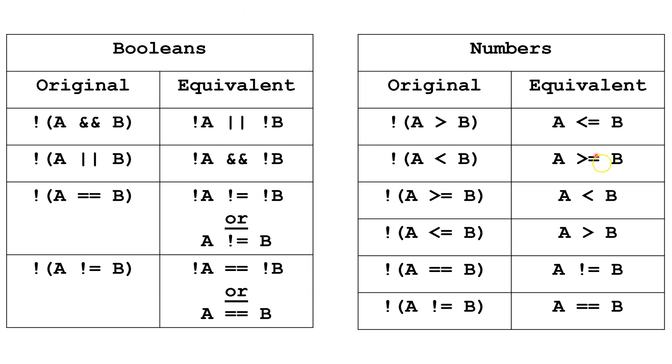Now, let's look at these tables. This is looking at some equivalents if A and B are Booleans. Here, we're using the exclamation point for a Not, the double ampersand for And, and the double vertical line for Or, as is done in many programming languages.